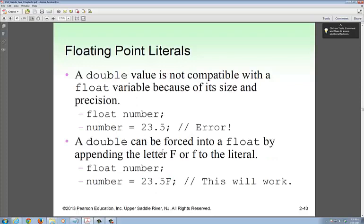If you look at price, tax, total, it gives you proper precision. This is about precision, the right data, and memory management. For example, float number = 23.5. A double value is not compatible with a float variable because of its size and precision. A double is eight bytes, a float is four. You can't squeeze eight bytes down to four bytes.